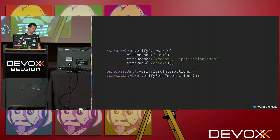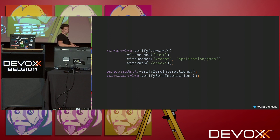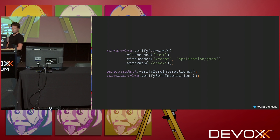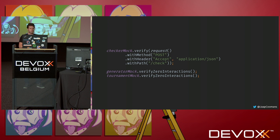I also want to check that my other mocks haven't been called. During the game I don't want my tournament service to receive any call, and I also don't want to generate a new code during the game — that would be really confusing. So I do verifyZeroInteractions, which coincidentally is exactly the same method name as in Mockito.